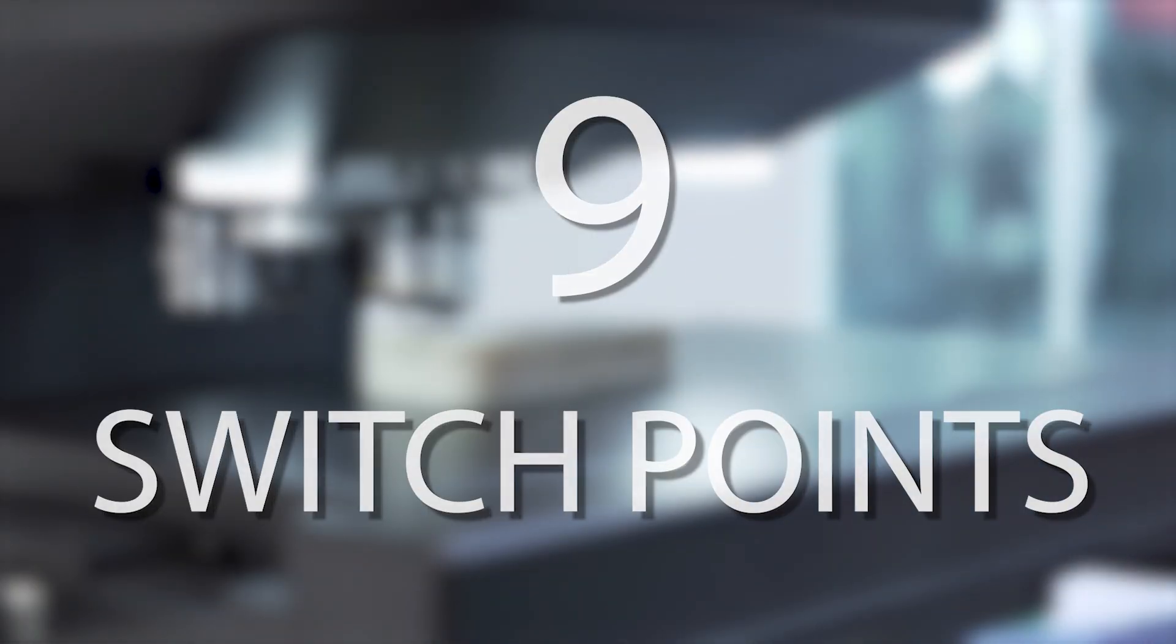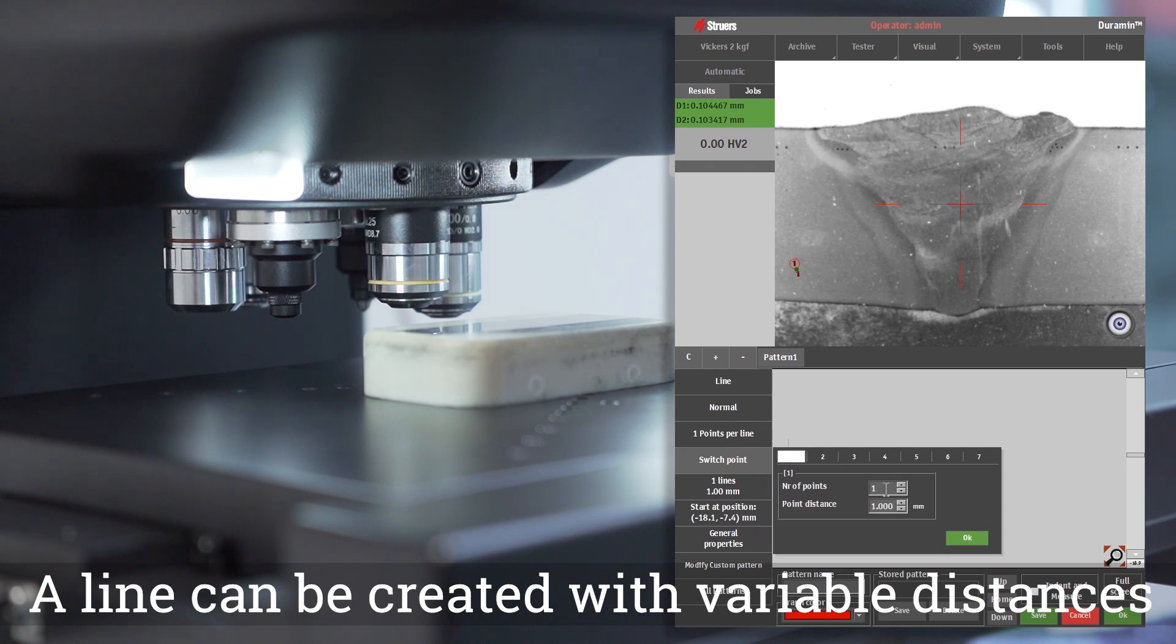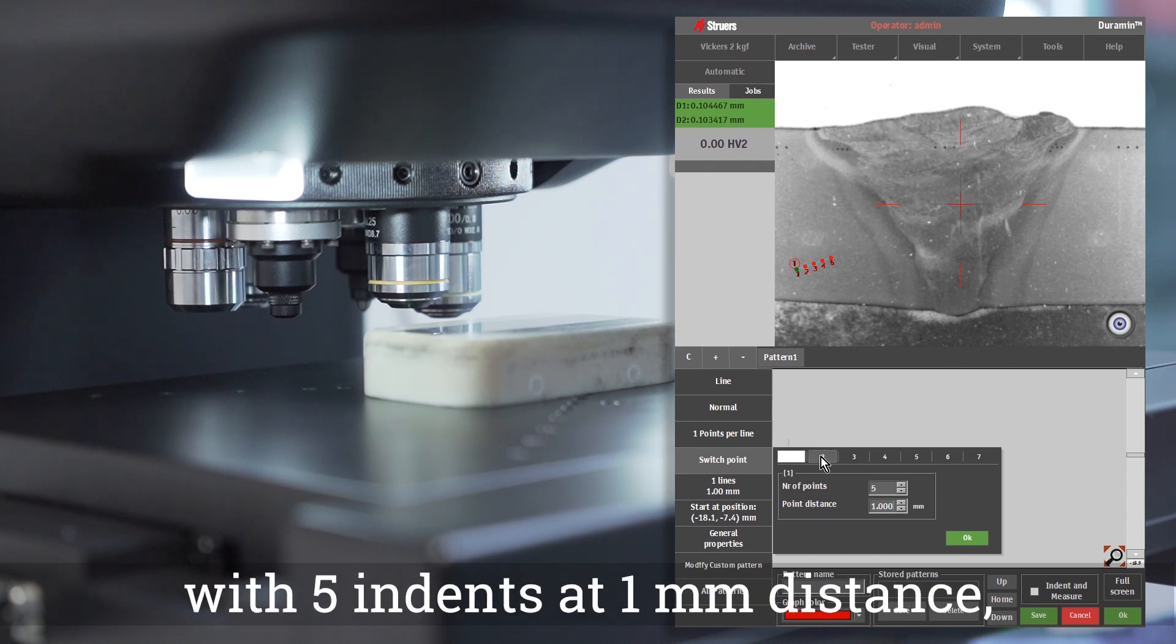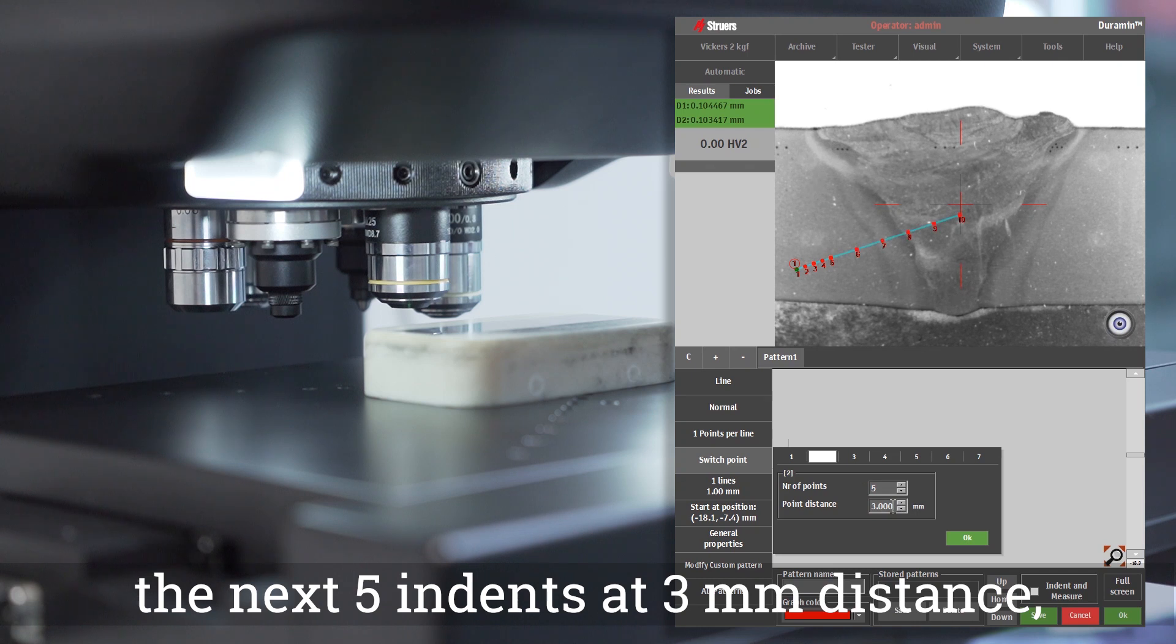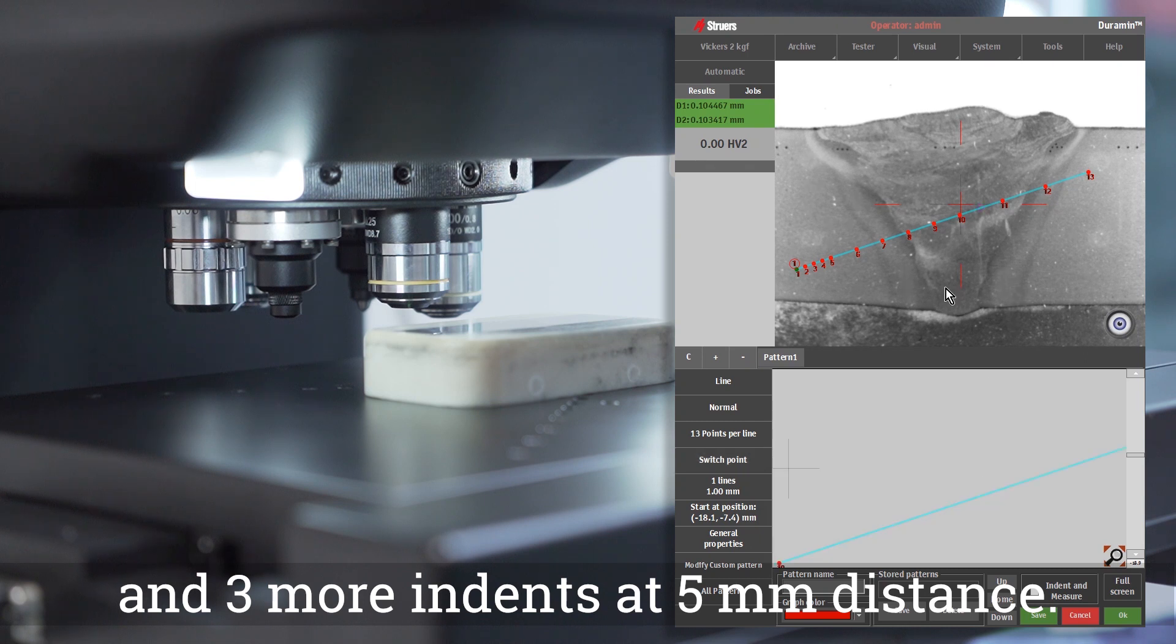Switch Points. A line can be created with variable distances between indents. For example, we want a line with five indents at one millimeter distance, the next five indents at three millimeter distance, and three more indents at five millimeter distance.